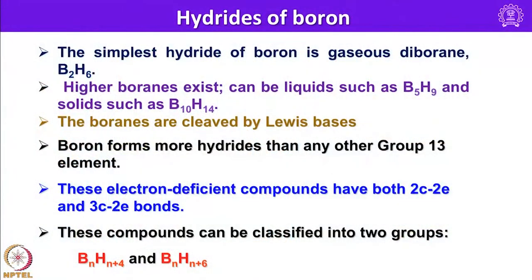To begin with, let me consider discussion on hydrides of boron. The simplest hydride of boron is gaseous diborane. The simplest one should have been BH3, but it does not have an independent existence and it dimerizes readily. As a result, for all practical purposes we can consider the simplest hydride of boron as B2H6. Higher boranes exist as liquids such as B5H9 and solids such as B10H14. We have numerous examples of boron hydrides both neutral as well as anionic. I shall give more details on those when I consider Wade's rules for explaining structures in boron hydrides.